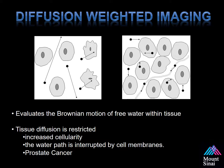Diffusion-weighted imaging looks at the Brownian motion of free water within tissues. If you look at the image on the left, there's really no restriction. As you increase the cellularity, the vectors of water in motion are decreased. This has been shown to associate with increased cellularity — the water path is interrupted — and therefore associates with prostate cancer's increase in cellularity as Gleason score increases.